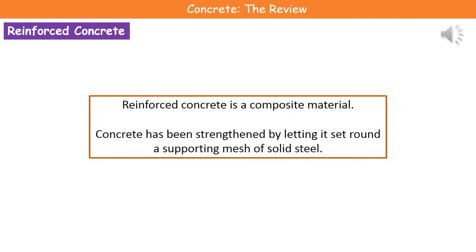One thing we can do to make concrete more useful is to create reinforced concrete. This is known as a composite material because it takes properties from two different materials. The concrete is strengthened by letting it set around a supporting mesh of solid steel. If you've looked at construction sites, you may have seen a grid of metal being placed before the concrete is poured over it — that's reinforced concrete.